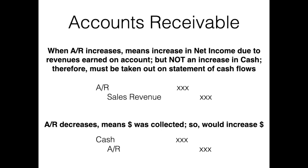When accounts receivable increases, that means net income increased because we have sold something on account — someone hasn't paid us yet, so it didn't increase cash. Therefore this would have to be taken out of net income on the operating activity section. If accounts receivable decreases, that means cash was collected, so that would increase the operating activity section on the statement of cash flows.